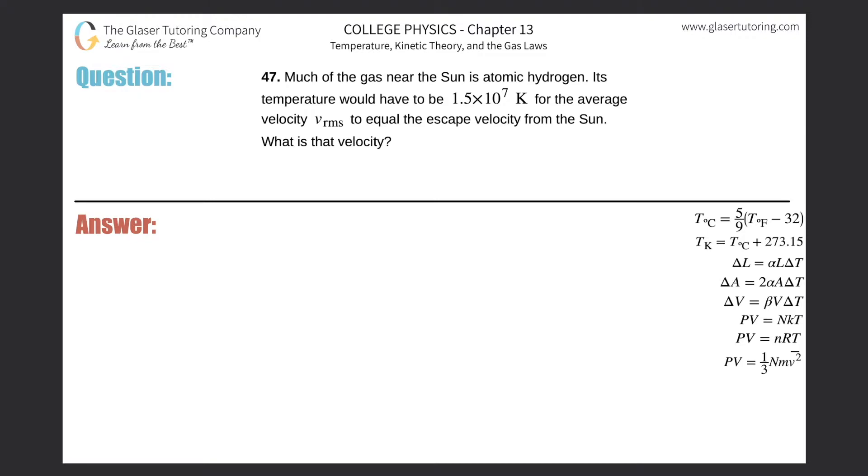Number 47: Much of the gas near the sun is atomic hydrogen. Its temperature would have to be 1.5 times 10 to the 7 Kelvin for the average velocity or root mean square velocity to equal the escape velocity from the sun. What is that velocity? Basically, we need an equation that relates velocity to temperature.